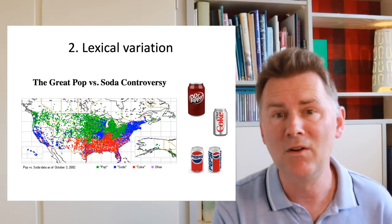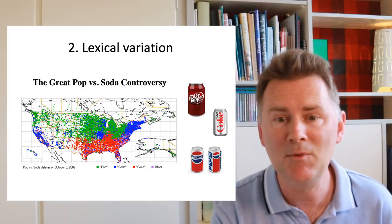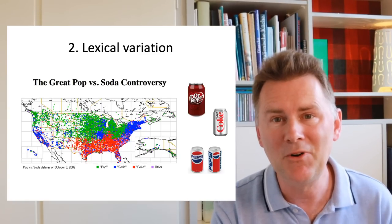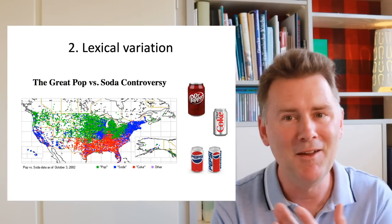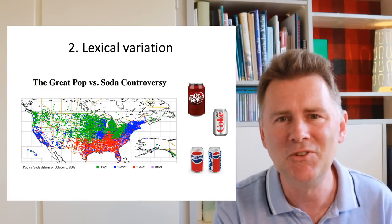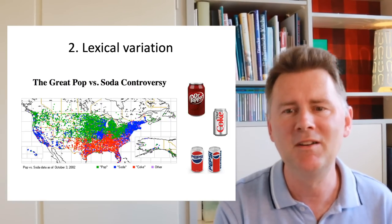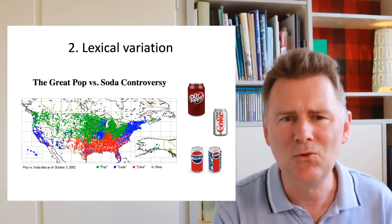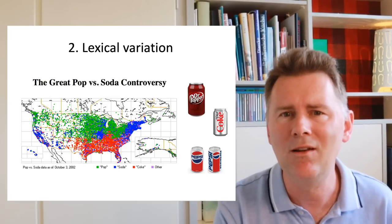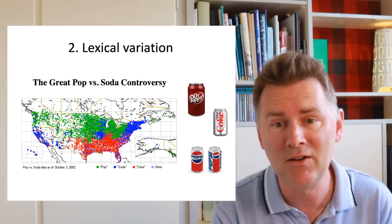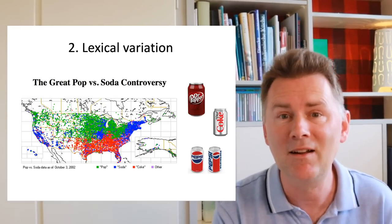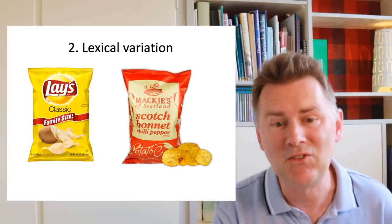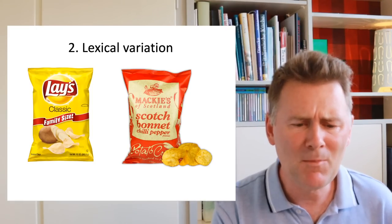Lexical variation is most visible when speakers of different varieties have different names for very common objects or concepts. The example that is here on this slide is the great pop versus soda controversy in American English that many of you will know. How do you call a sugary carbonated drink? For some speakers of American English it's pop, for others it's soda, and for still others it's called coke. If you've had English at school, there's a good chance that your teacher talked about lexical variation between British English and American English. So they would have mentioned things like lift versus elevator or of course the classic chips versus crisps.